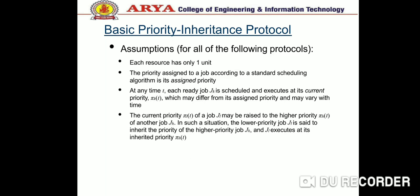Priorities of tasks are fixed except for the conditions described. First, job J requests resource R by executing Lock(R). If R is available, it is allocated to job J, which continues to execute and releases R by executing Unlock(R).